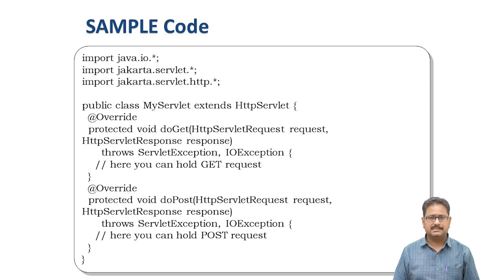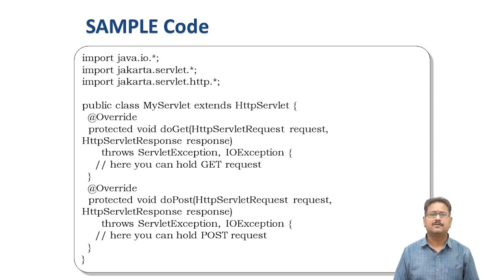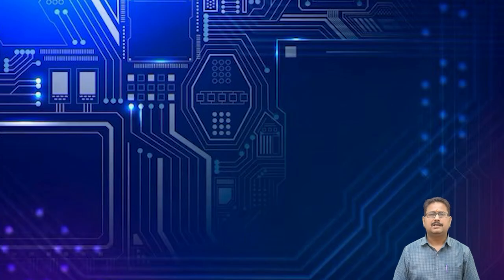Both methods have the same signatures, differing only in their names — doGet and doPost. All parameters and exception handling are the same. We pass two parameters: HttpServletRequest and HttpServletResponse, in both doGet and doPost. We throw two exceptions: ServletException and IOException. Now let us understand the architecture of the doGet method and how we use it in an HTML form.